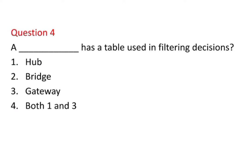The next question is: which of the following has a table used in filtering decisions? Options are hub, bridge, gateway, or both hub and gateway. Filtering is a concept discussed in the networking devices introduction videos — if you haven't watched those, please check them first.